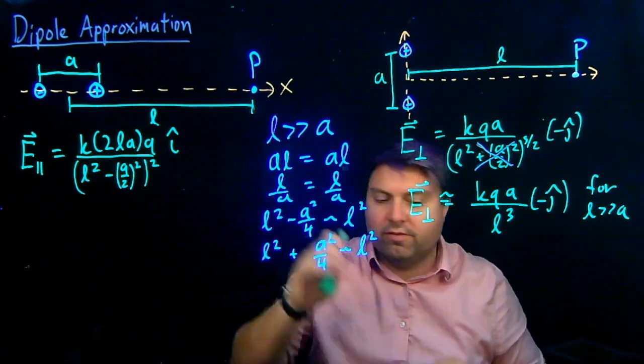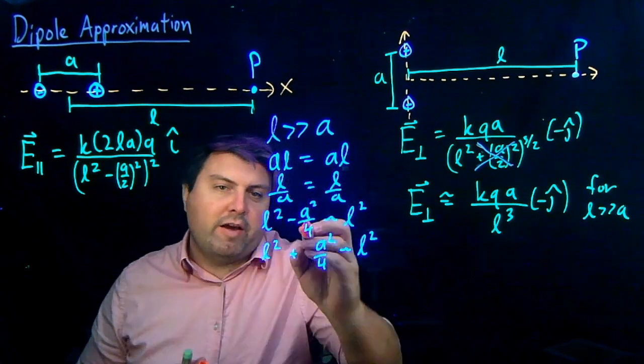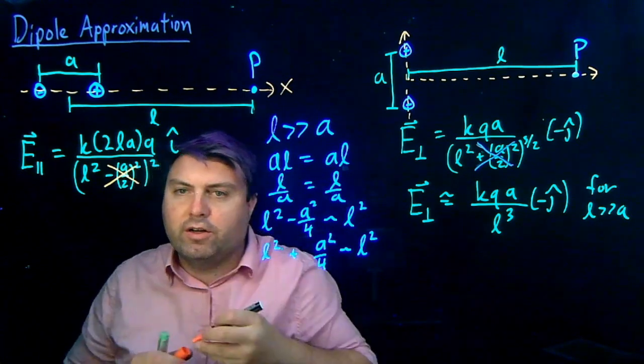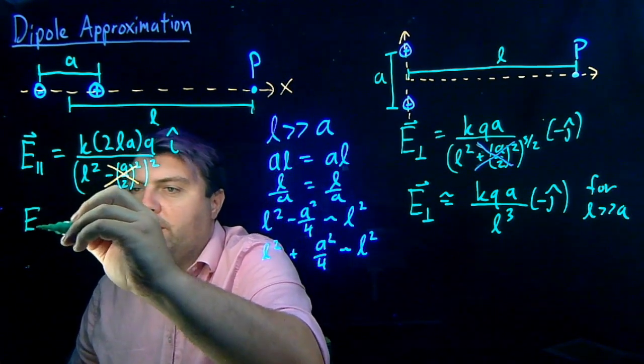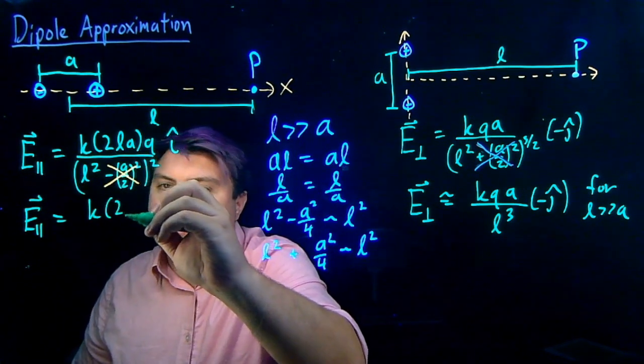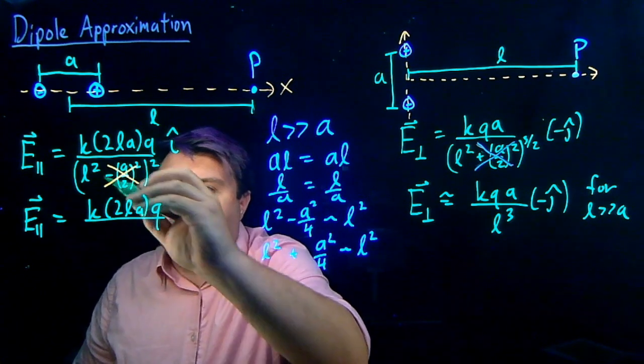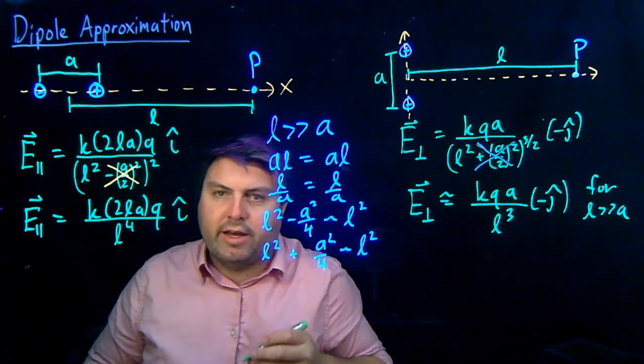Let's take a look at over here. So, over here, we have a similar thing. We have this L squared minus A squared over 4 goes away, and so now we get E parallel is K2LAQ over L squared squared L to the 4th I hat over here.